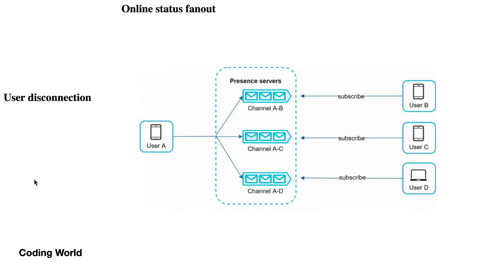For online status fan-out: when you go offline, the other person — from the chat group or one-to-one chat — should be able to see you as offline. We use a fanout service where whenever a user goes offline, a message is created and put into a channel. The members of that channel are notified that the user is offline. This is solved with the help of message queues.